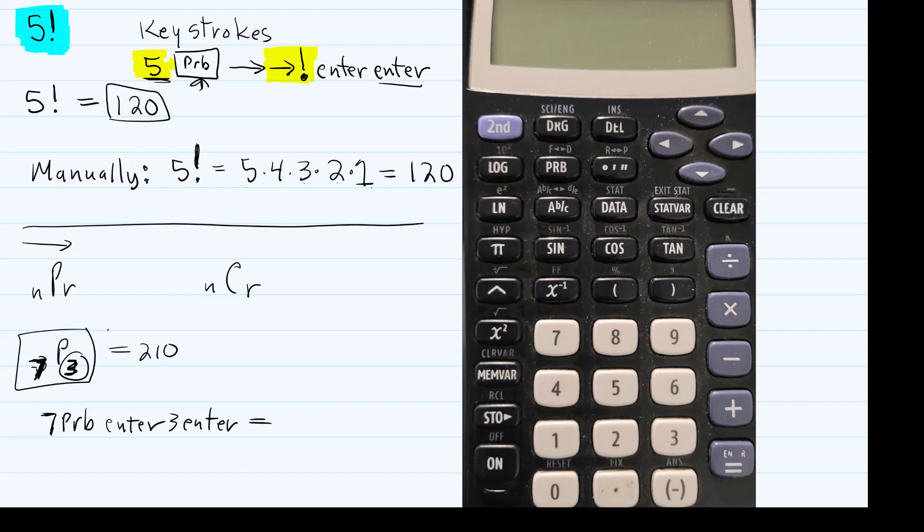So if it talked about a combination, you would just arrow over. So if it said, talk about a combination and they gave the same numbers, you would type in seven, the PRB button. Then you would arrow over until you saw the symbol. This symbol, you would hit enter, and then you would depress three and then hit enter again. So let me do that.